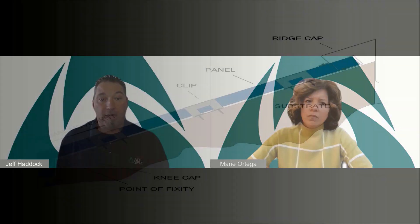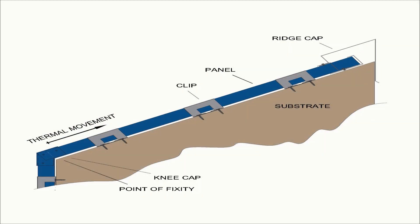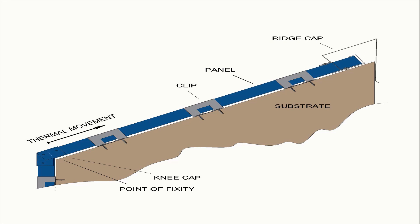The second way to accommodate thermal movement is along the eave line or low end of the panel, requiring panels to expand and contract uphill to the ridge. An example would be continuous transitions where the panels are folded down the fascia or wall without a break in the material. This fold creates a point of fixity, requiring panels to now expand and contract uphill, and a specialized ridge detail is used that allows panels to push into the ridge without tearing it apart.